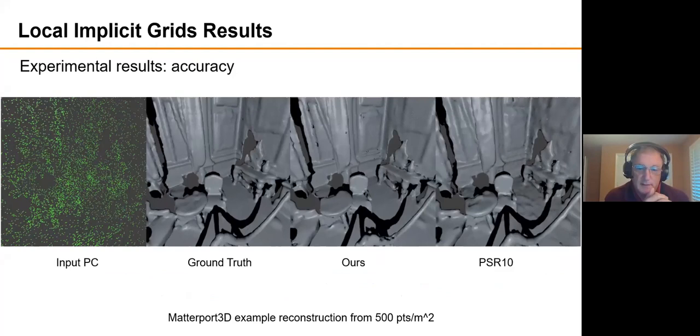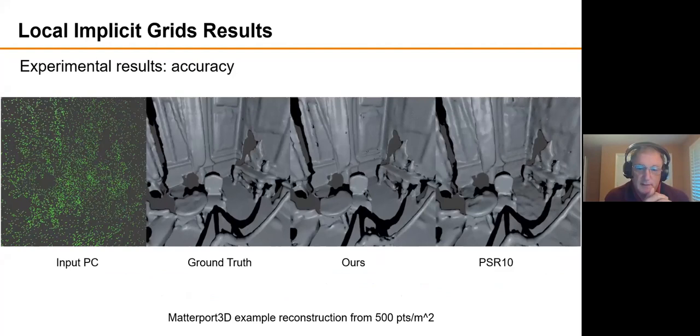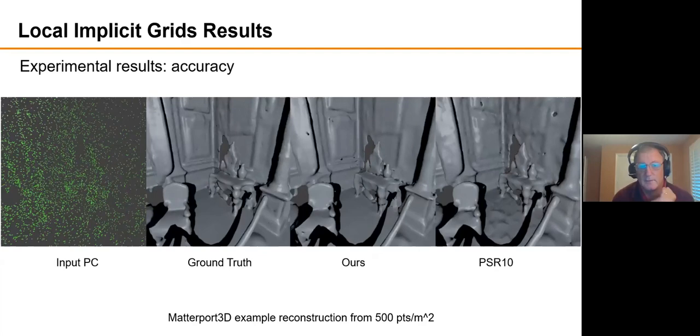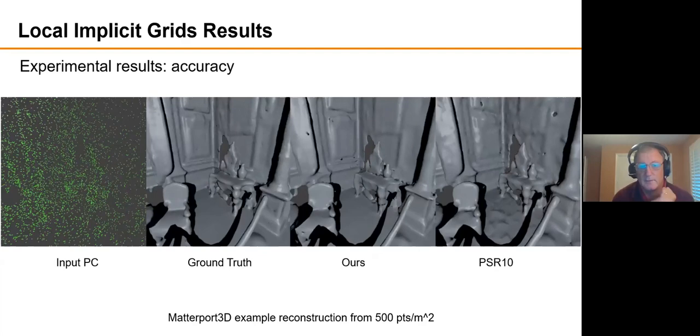And if we compare to traditional 3D reconstruction methods, so explicit ones. If the input here is a sparse point cloud, like shown on the left with the green points, and our goal is to reconstruct a surface, Poisson surface reconstruction at level 10 is what's shown on the right. That's the best level for this scene.